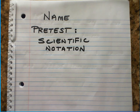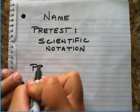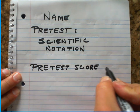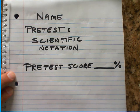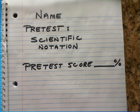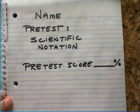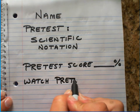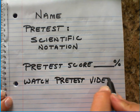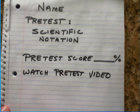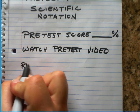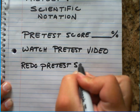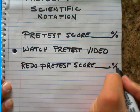First thing you're gonna do is you're gonna take the pre-test. When you get that score, you're gonna write it down right there. Then you're gonna watch the pre-test video. Then you're gonna redo the pre-test and write down your new score.